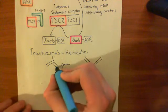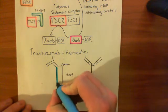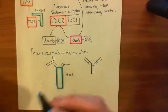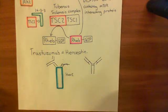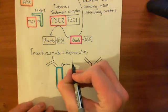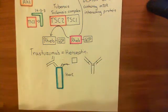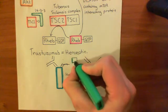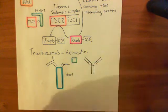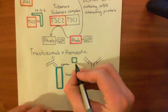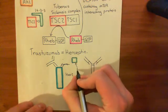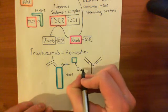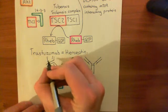Now, when trastuzumab binds to the extracellular domain of the HER2 receptor, then the growth factor, the epidermal growth factor, which needed to come and bind to the HER2 receptor extracellular domain in order to activate it, it can't get past the trastuzumab. The trastuzumab is stopping the epidermal growth factor here from binding to the HER2 receptor. So this is the epidermal growth factor here, or the EGF, and this here is the trastuzumab molecule.